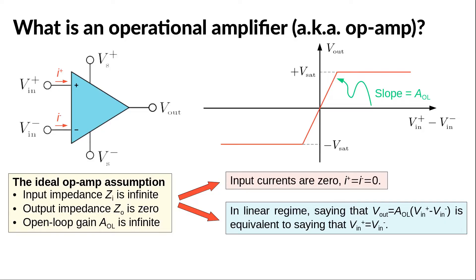And the infinite open-loop gain implies that the two input voltages are equal when the regime is linear. Indeed, the output voltage has a finite value. If the linear regime applies, then this finite value is the product of the infinite open-loop gain with the difference in input voltage. Thus, this difference has to be 0, so the input voltages have to be equal.